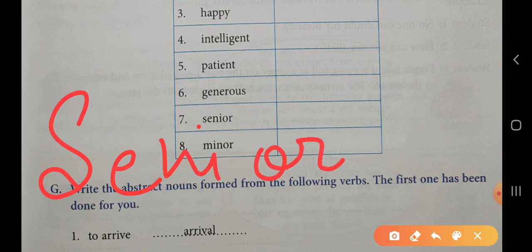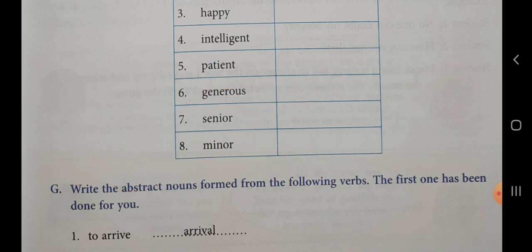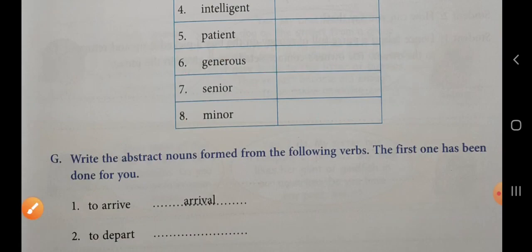Our last word is minor. As we have added I-T-Y to senior, same thing we will do for minor. The spelling of minor is M-I-N-O-R. We will add I-T-Y.